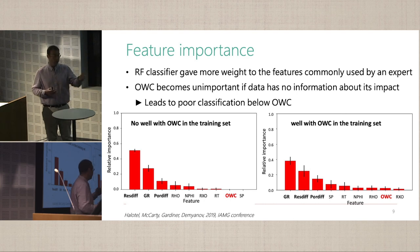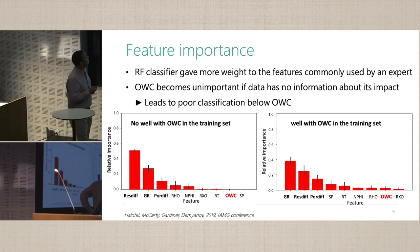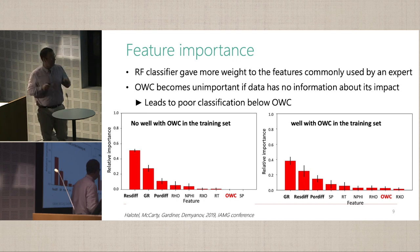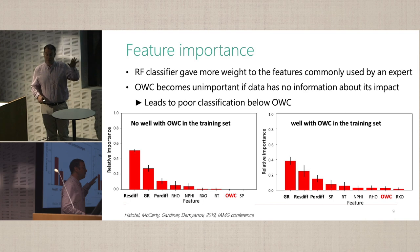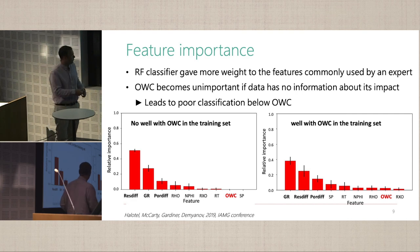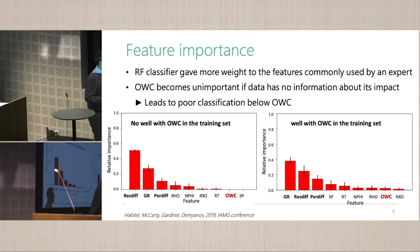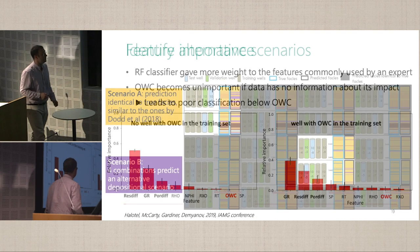There was one more feature of interest: the oil-water contact, because there's only one well with an oil-water contact. When that well wasn't in the training set, that feature had zero impact — fair enough. But when included, the intervals below the oil-water contact, which had previously failed prediction because wireline behavior is affected by water, gained weight and the prediction in that interval improved massively.